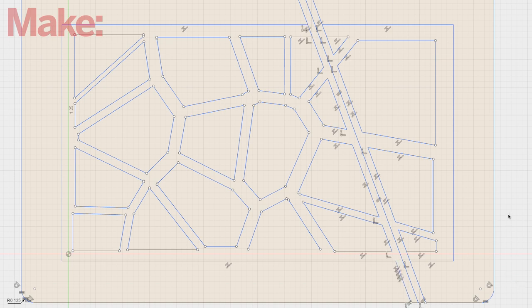Now we use the trim tool to actually define our design from all these overlapping lines. Don't worry if you make a mistake—you can get your lines back with a quick undo. We should end up with two distinct shapes starting to take form even though they're right next to each other.